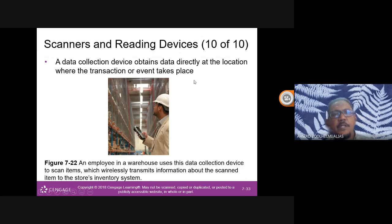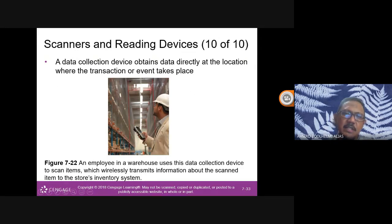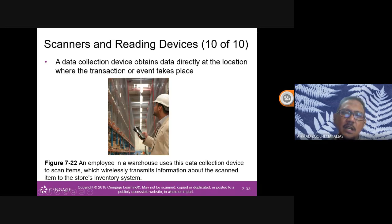Data collection devices capture data at the location where the transaction or event takes place. For example, TNB or water utility meter readers use handheld devices to read a meter, and the bill is printed on the spot and entered into the system immediately. Previously, meter readers would record readings manually, go back to the office to key in data, and then post the bill.